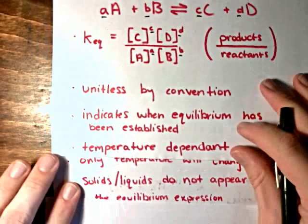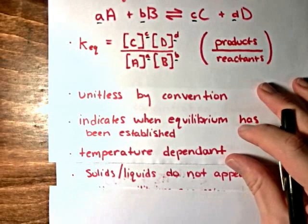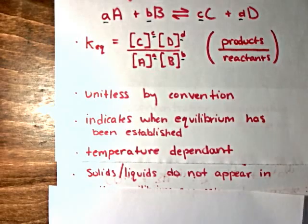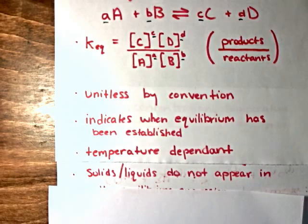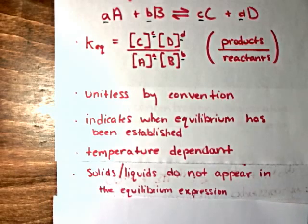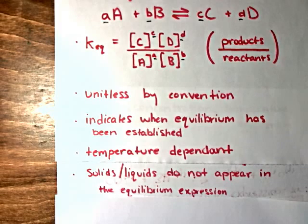That's why if you're given the equilibrium constant in a problem, it will be given along with a stated temperature. Also, if you're asked to write an equilibrium expression from a given chemical reaction where some of the species are in the solid or liquid state, you do not include those species in the equilibrium expression. This is because solids and liquids do not affect a chemical equilibrium — only species in the gas or aqueous phase are included.